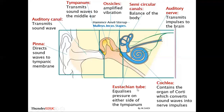The Eustachian tube is very important in equalizing the pressure on either side of the tympanic membrane. If there is high pressure on one side and low pressure on the other, the Eustachian tube adjusts so that the pressure inside and outside is equal, preventing rupturing of the tympanic membrane. Therefore the Eustachian tube protects the tympanic membrane by equalizing pressure on both sides.